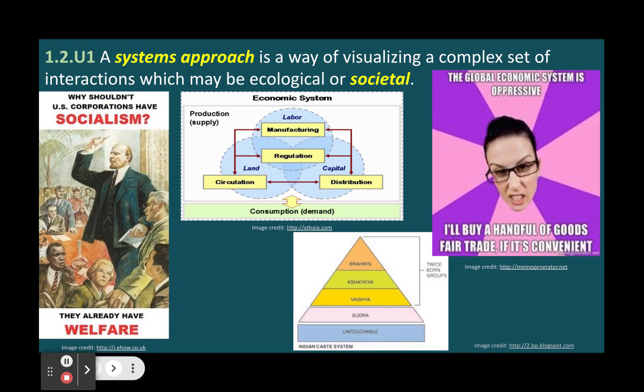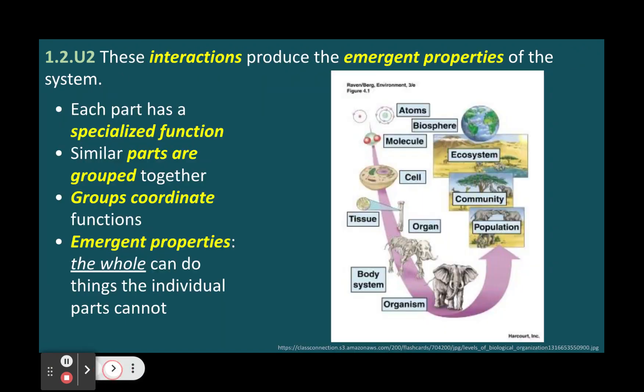The concept of a system can be applied to a range of scales from microscopic to global. For example, at the microscopic scale, we can study the system of a cell, which consists of organelles, molecules, and atoms. At the global scale, we can study the system of the earth, which consists of different spheres, such as the atmosphere, the hydrosphere, lithosphere, and biosphere.